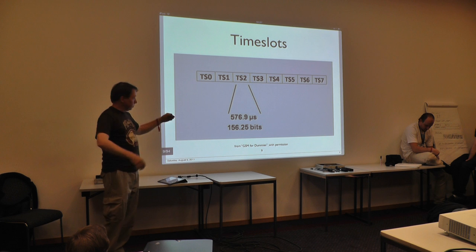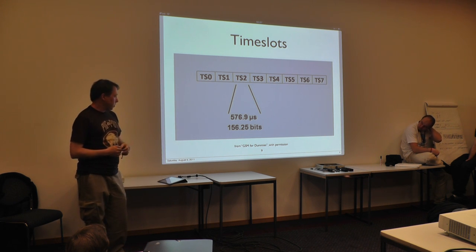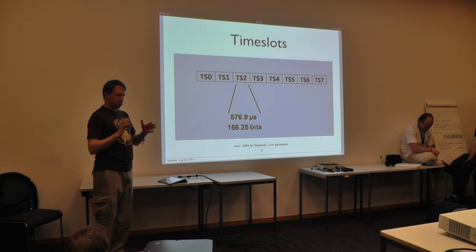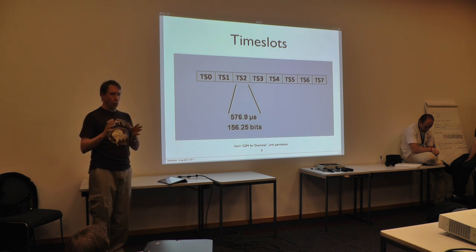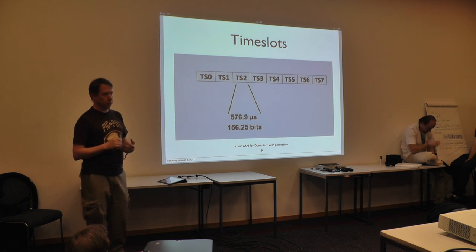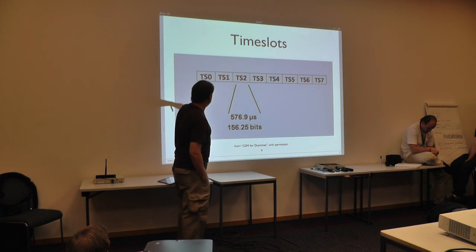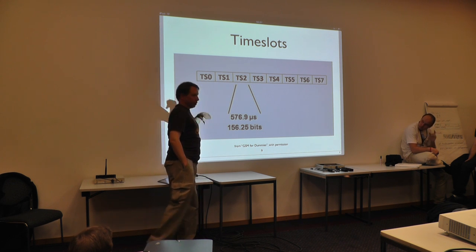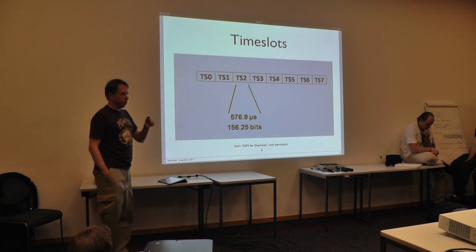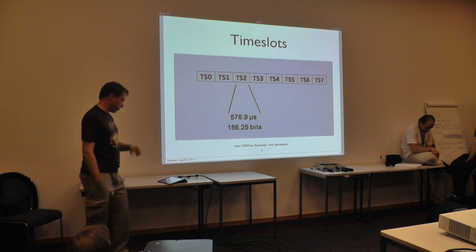This is the basic eight-slot structure of GSM. Each time slot is just under 577 microseconds in duration, which corresponds to 156 and a quarter channel bits. The extra quarter bit comes in because each time slot is preceded by a guard period — a period of no transmission — and that guard period is not an integer number of bit durations.